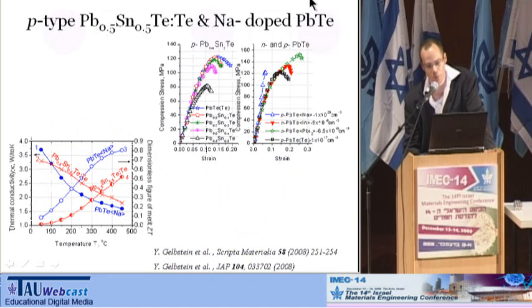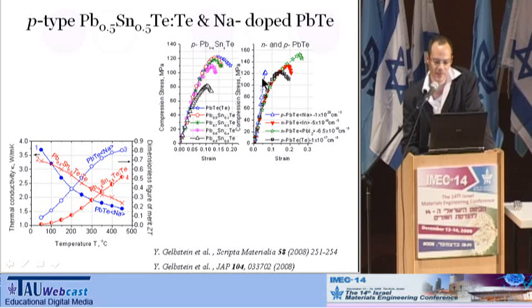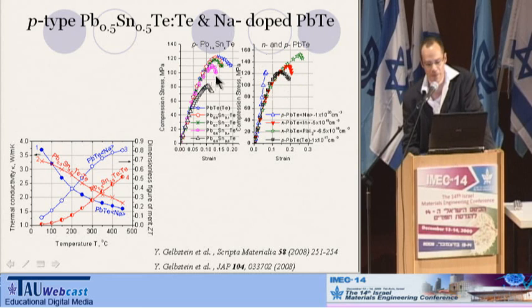Another approach was doping lead telluride with sodium, which is a known acceptor in these materials. We managed to increase ZT further to a value of 0.8. But the question is whether just enhancing the ZT value will give us the desired goal, and the answer is no. We need also proper mechanical properties. Looking at the stress-strain curve of the sodium-doped lead telluride — the blue straight line — it is purely elastic, devoid of any plastic deformation zone observed in all other compositions. We concluded that sodium-doped lead telluride, although having higher ZT values, could not be incorporated in practical devices.